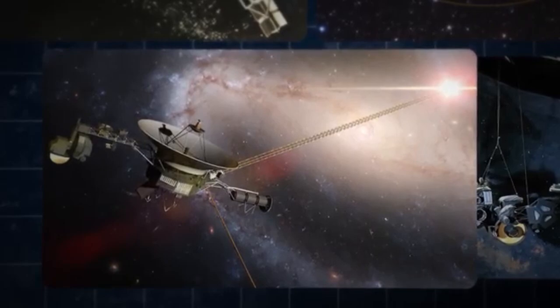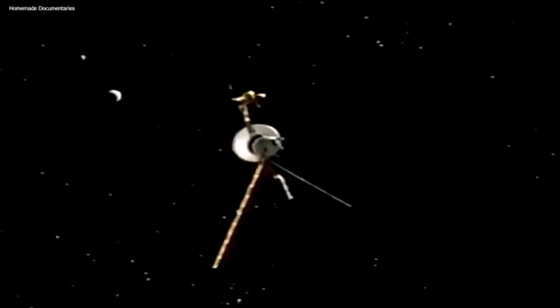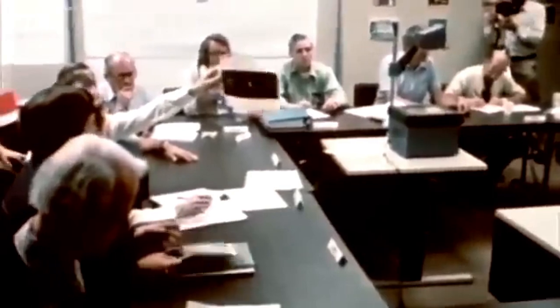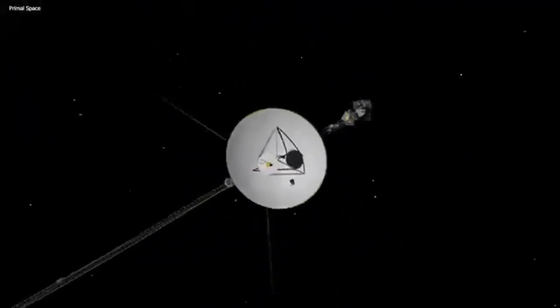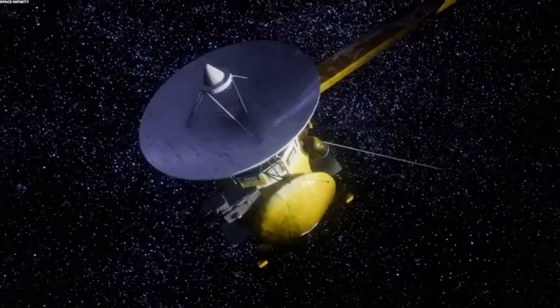Voyager 1, approximately 14.6 billion miles away, requires a considerable amount of time for radio signals to travel. The mission team at NASA's Deep Space Network sends commands to Voyager 1, which travels as a radio signal at the speed of light.